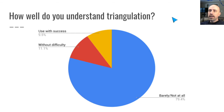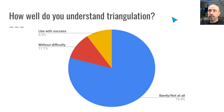I've asked people in genealogy groups about triangulation. In particular, I've asked in the group that I administer, Ancestor DNA Matching, how well do you understand triangulation? Triangulation isn't possible at AncestryDNA, so it's not a surprise that in a group where most of the people are focused on AncestryDNA, there is a need to learn more. About 80% of people said they barely understood triangulation or didn't understand it at all, and about 20% had some knowledge and were fairly comfortable with it.